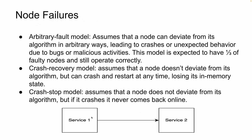Moving on to node failure, service one and service two can individually fail as well, so we have certain fault models for that. The first is the arbitrary fault model, which assumes that a node can deviate from its algorithm in arbitrary ways. This can happen due to crashes, unexpected behavior, bugs, or malicious activities — essentially the service is not performing the way it is expected to.